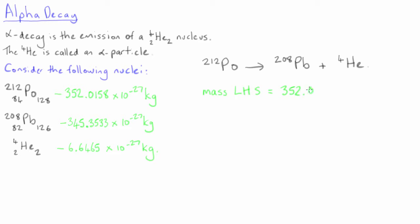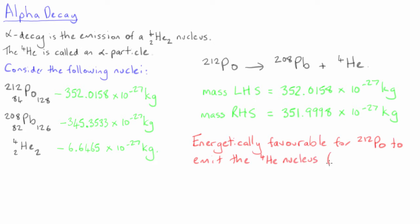If we evaluate the total mass of the left-hand side, we can see that it is higher than the total mass of the right-hand side. Hence it is energetically favorable for polonium-212 to emit a helium-4 nucleus, with this alpha particle carrying away kinetic energy to conserve the total energy.